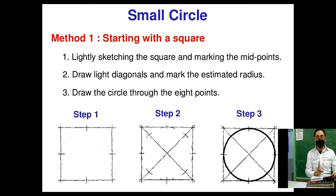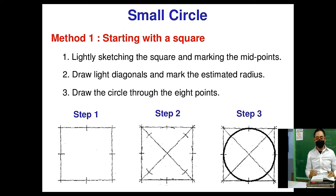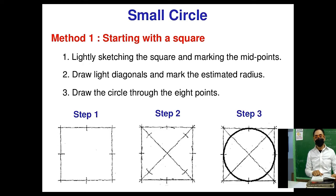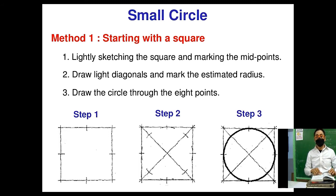To draw a circle, start with a square. Step one: lightly sketch the square and mark the midpoints. Step two: draw light diagonals and mark the estimated radius. Step three: draw the circle through the eight points. And there you have your perfect circle.